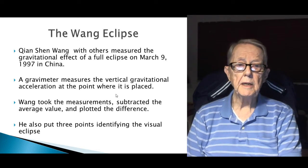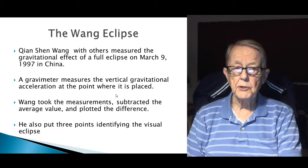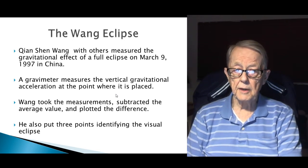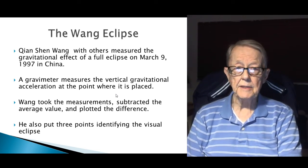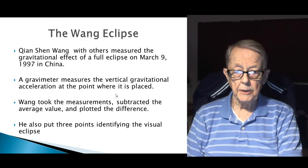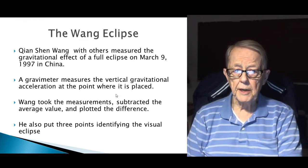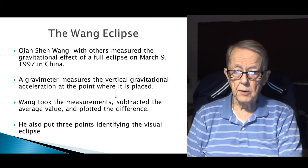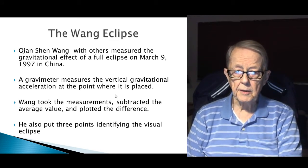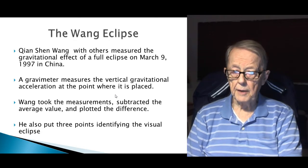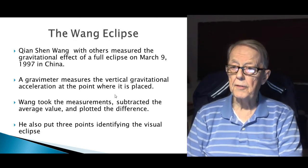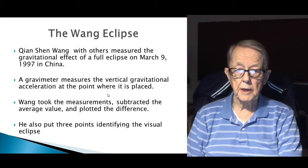The Wang Eclipse. Yen Chen Wang, with others, measured the gravitational effect of a full eclipse on March 9th in 1997 in China. He used a gravimeter, measures the vertical gravitational acceleration at a point where it's placed. Wang took the measurements, subtracted the average value, and plotted the difference. He also put three points, identifying the visual eclipse, just like Maurice did.